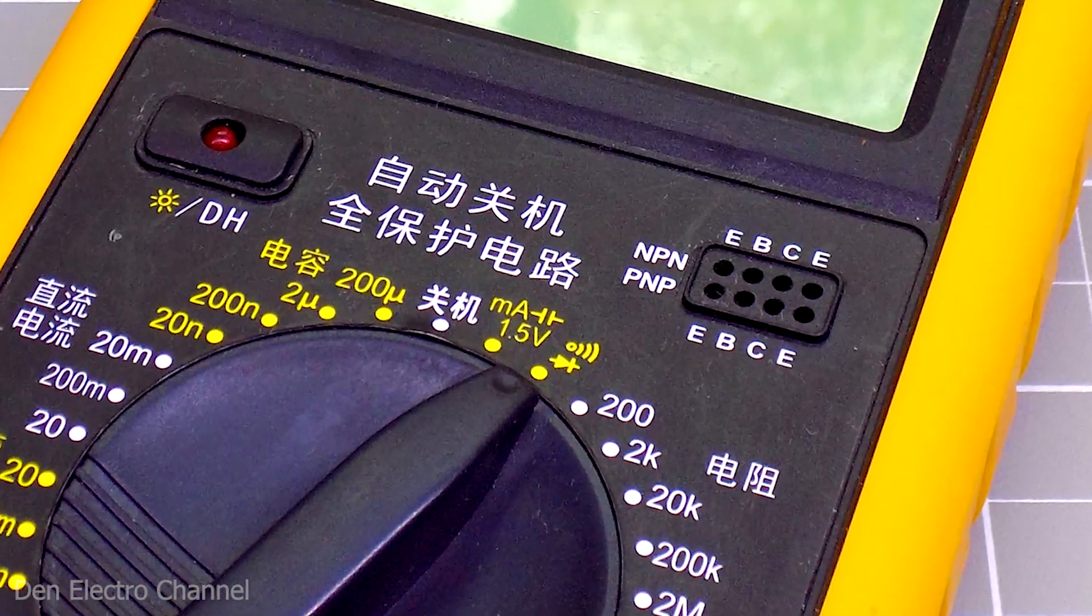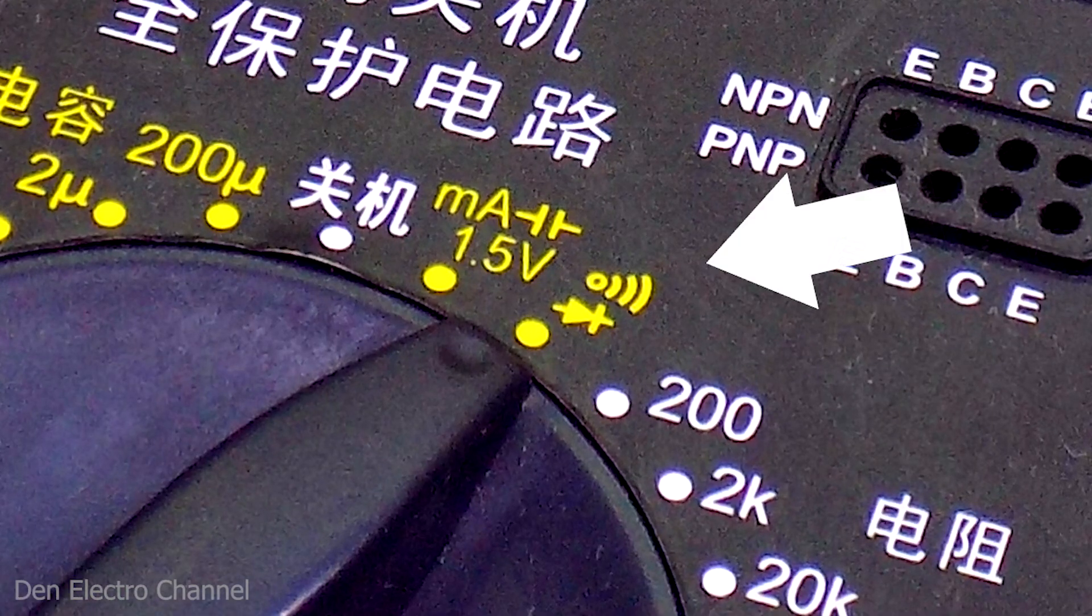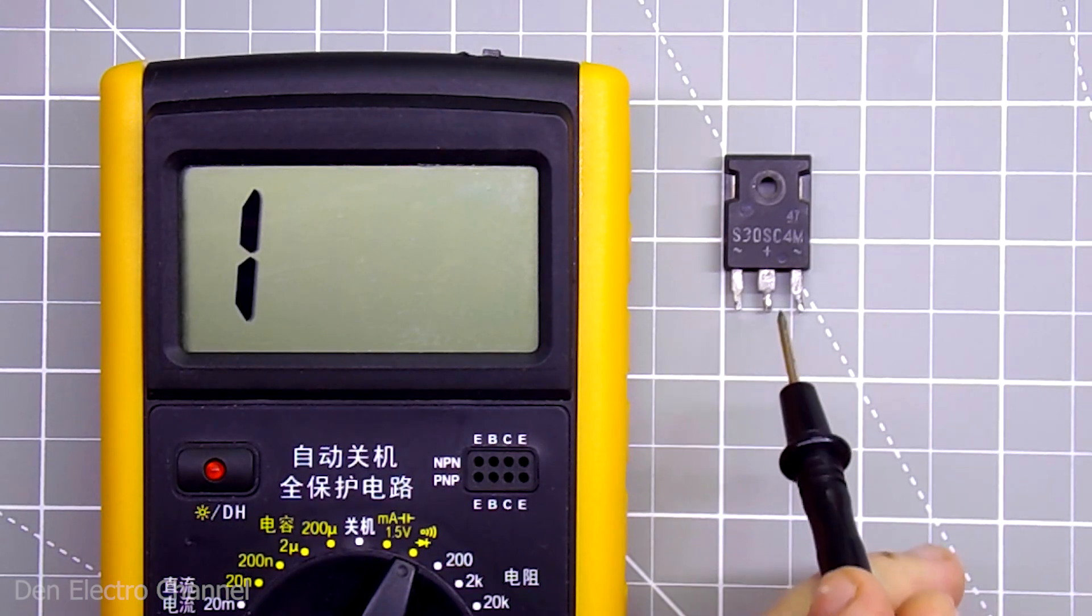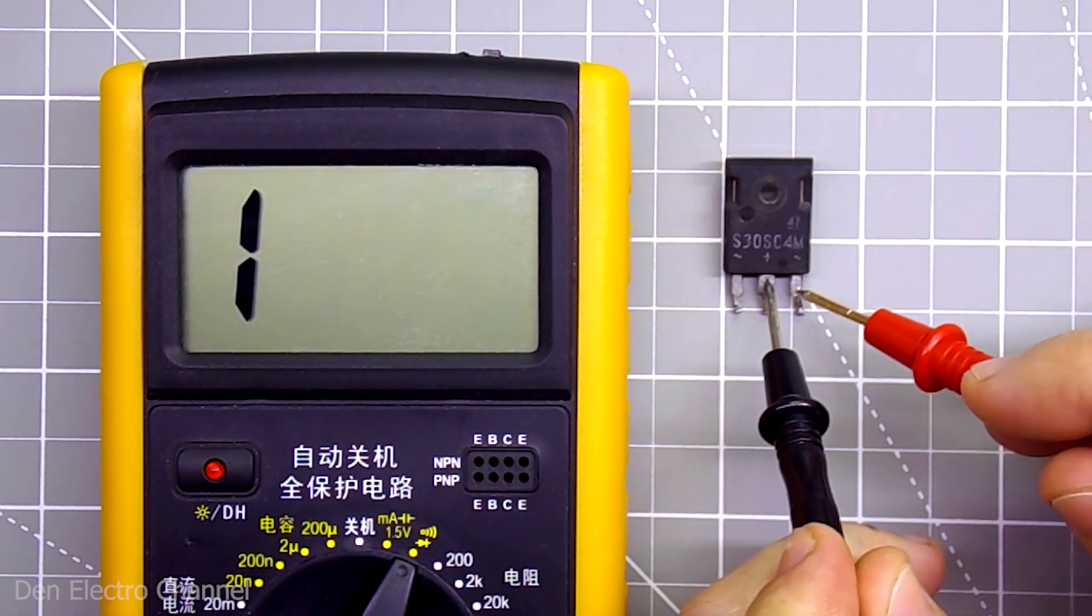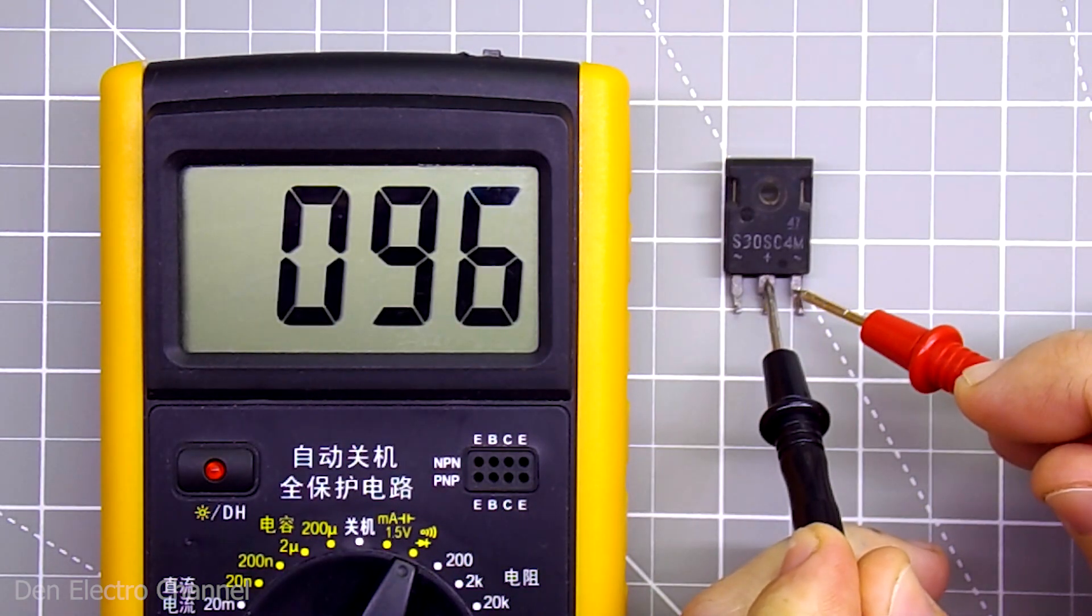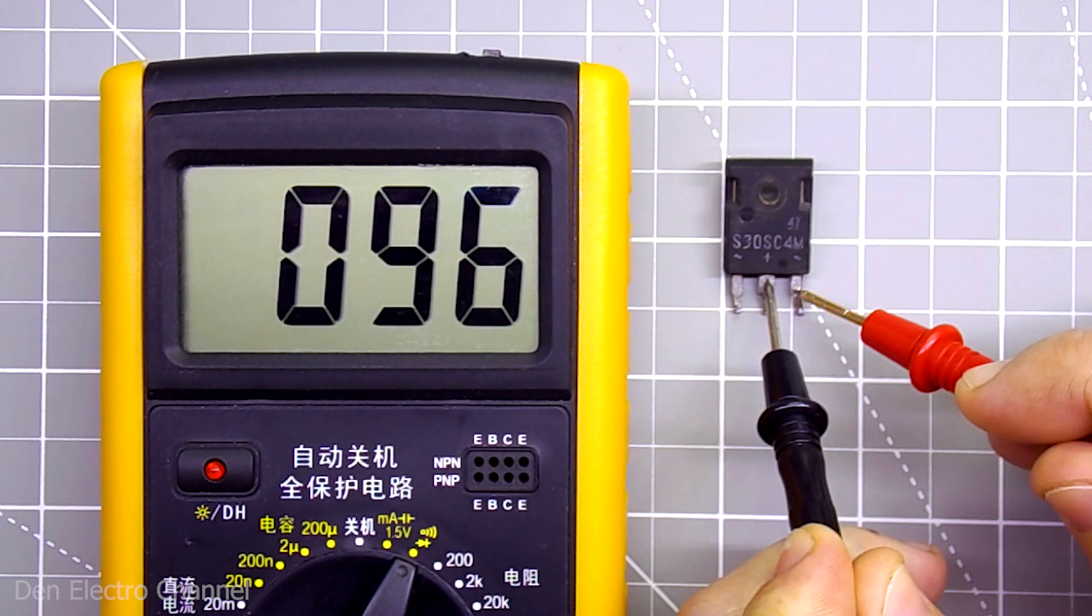If the multimeter has a diode test function, then it is very easy to measure the voltage drop. I apply the negative probe of the multimeter to the cathode and the positive to the anode. It shows only 96 millivolts.